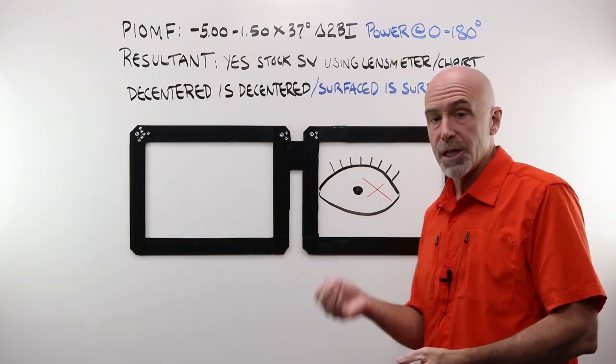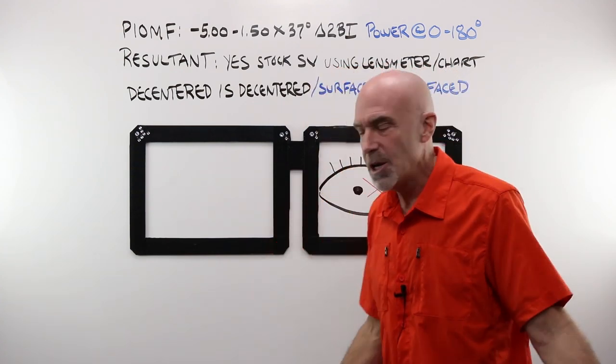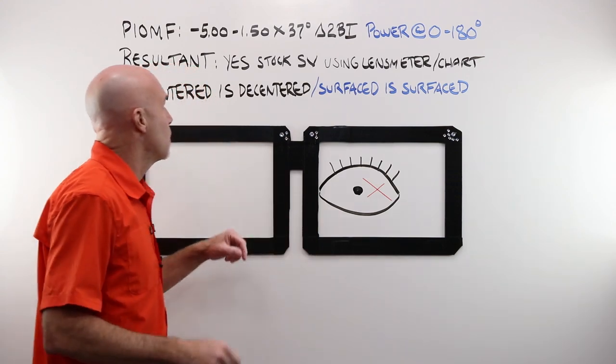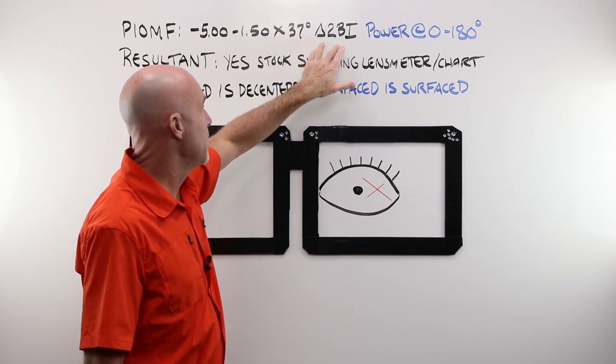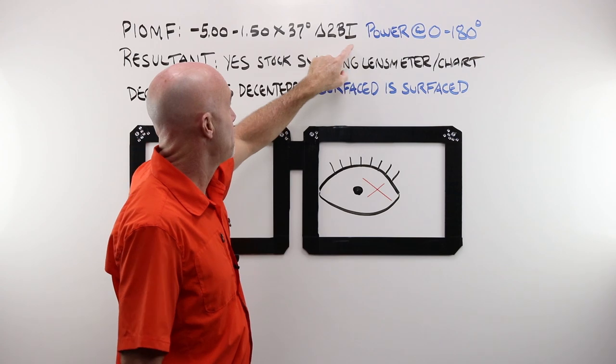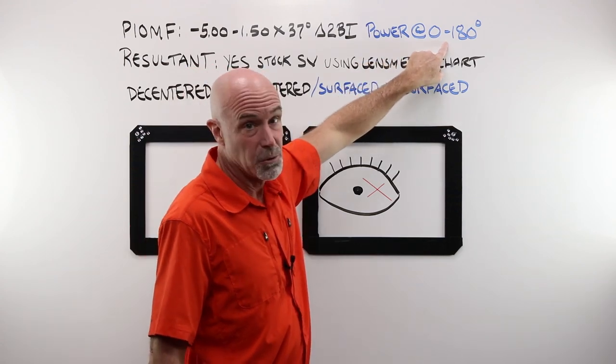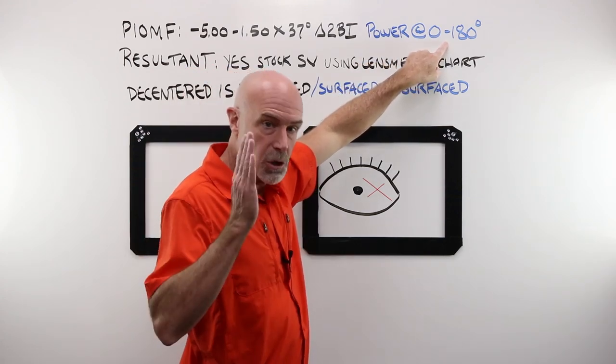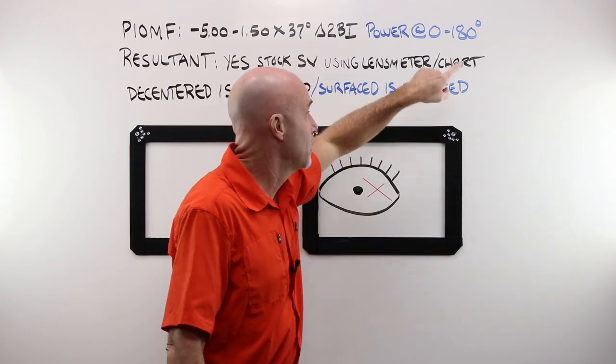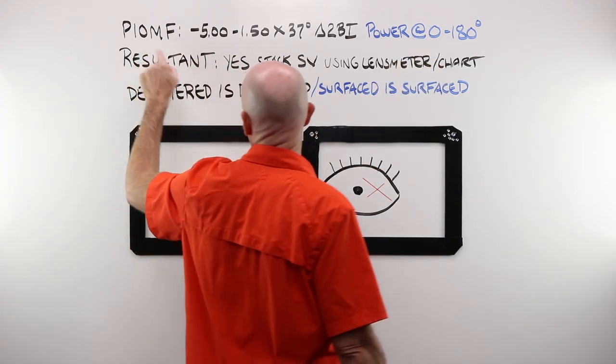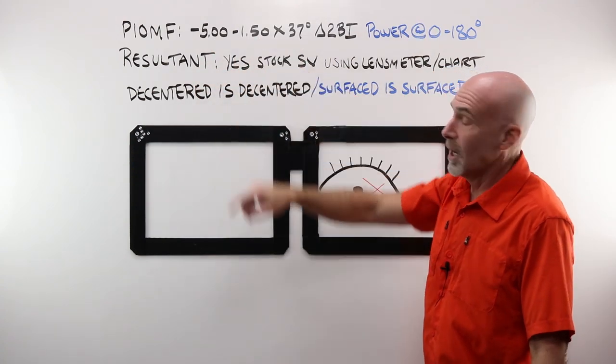Really quick before we get into our three examples, I just mentioned needing to know the powers in oblique meridians formula. Why would you need to know that? If you were given a lens order for minus 5, minus 150 at 37 with two diopters of base in prism, you would need to know the power at 0,180 to create that base in prism. You can't use the percent rule or a guesstimate or, hey, close enough. You need to know exactly what the power is along the 0,180. So you'd better either have an app in order to plug it in and calculate that for you, or work the powers in oblique meridians formula to find out what is at 0,180 on that particular lens.